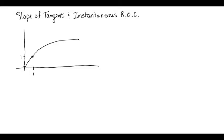We were looking today at the slope of a tangent line and the instantaneous rate of change. We had this graph labeled as f(x) = √x. We created a table of values, and what we got down to with our table of values is the ordered pair (1,1), and then when you substitute 1.1 into the square root, when you calculate the slope of the secant through these two points using (y2 - y1)/(x2 - x1), you get an answer that's approximately 0.488.